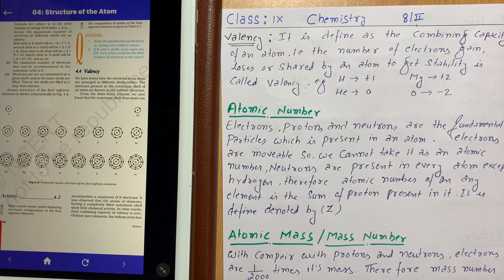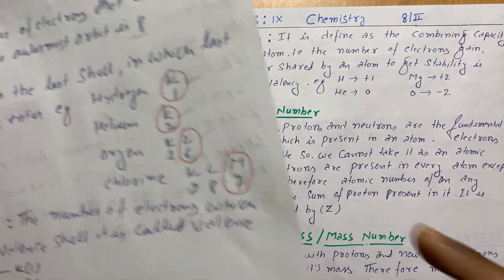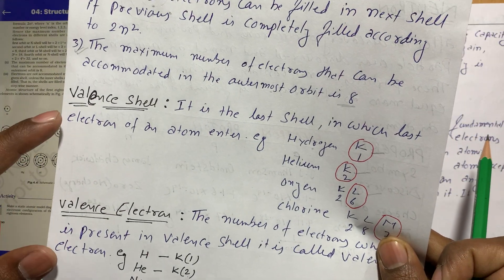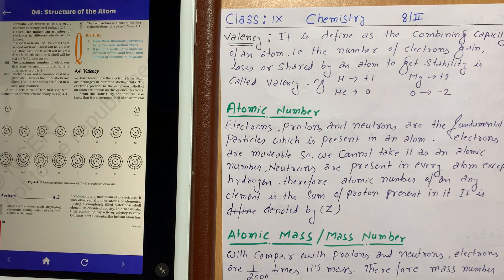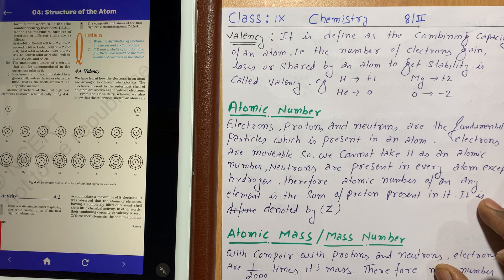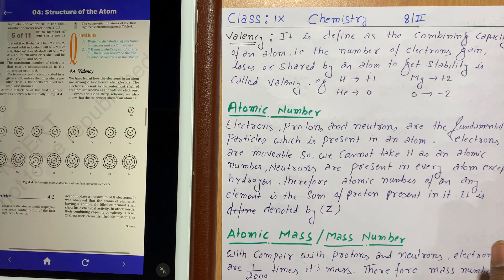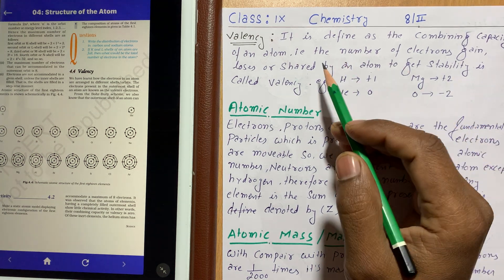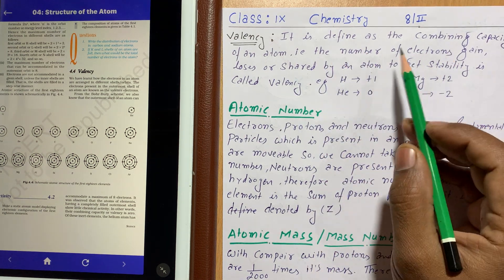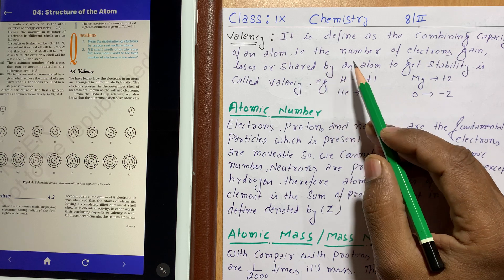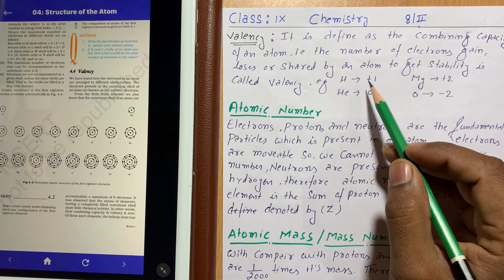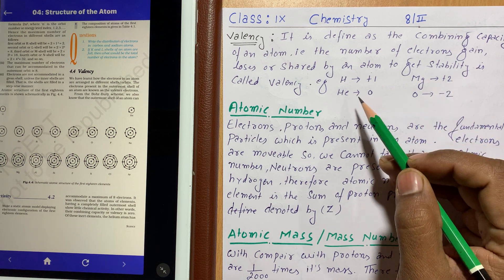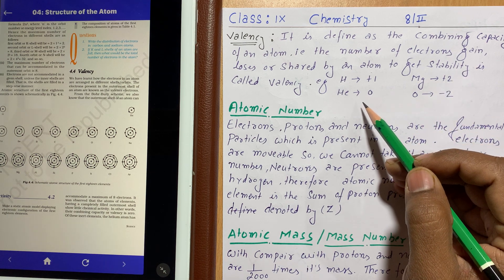Good morning everybody. In the last video, the last topics we discussed were the valence shell and the valence electrons. Today I'm going to start with another topic, which is valency. Valency is defined as the combining capacity of an atom — the number of electrons gained, lost, or shared by an atom to get stability.